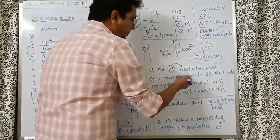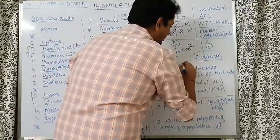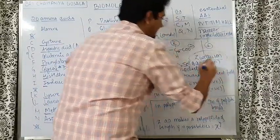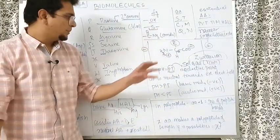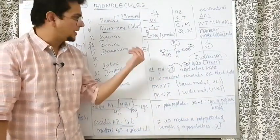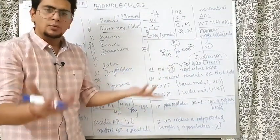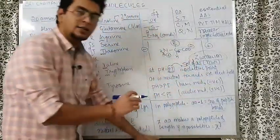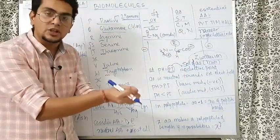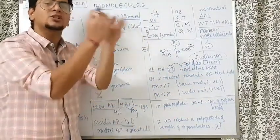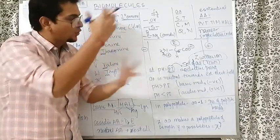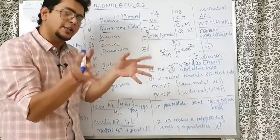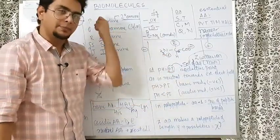At the isoelectric point, what can you tell about the solubility of the amino acid? Solubility of the amino acid is minimum at the isoelectric point. Why? Because it is almost neutral there — plus and minus are balancing each other. Whereas if you have a net positive or net negative charge, due to the ionic nature, the attraction towards water will be more, so solubility will be high. Above or below the isoelectric point, solubility is more. But at the isoelectric point, solubility is minimum.